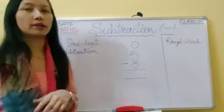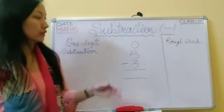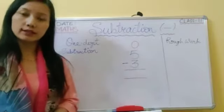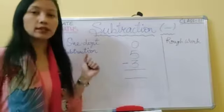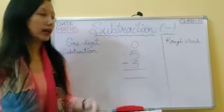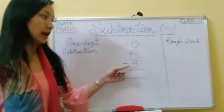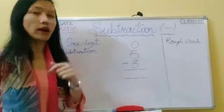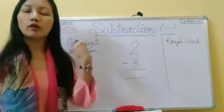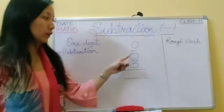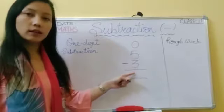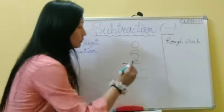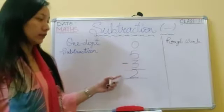Let's do one digit subtraction. Tell me five minus three — what will be the difference? We will use the count-on method. Three is smaller than five, so keep the smaller number three in your head and count on to five: three, four, five. So the difference is two. Five minus three — the difference will be two.